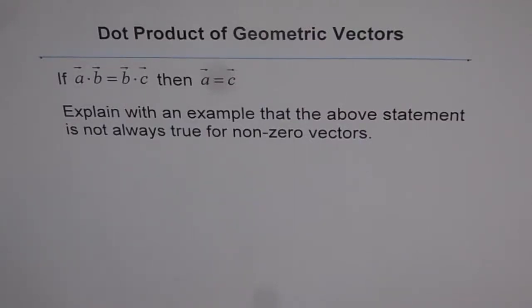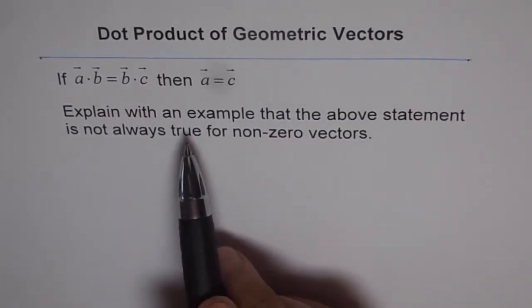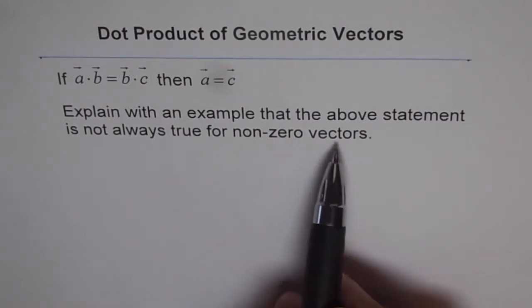Dot product of geometric vectors. If A dot B equals B dot C, then A equals C. Explain with an example that the above statement is not always true for non-zero vectors.